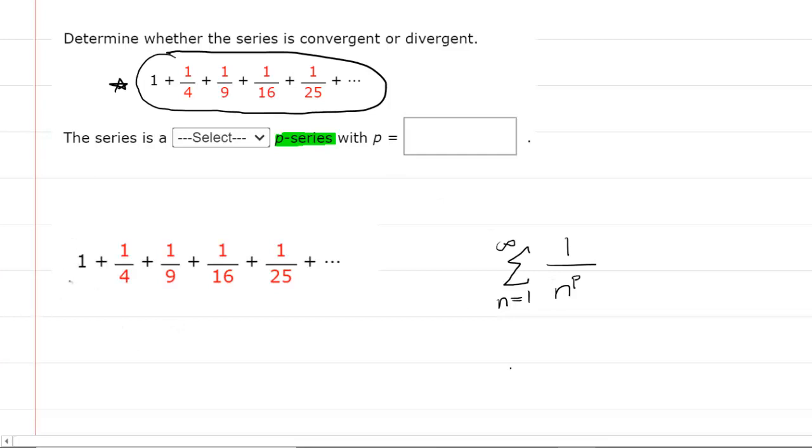To understand how to do that, let's rewrite the series. Let's start with the first term, which is just 1. Why don't we rewrite that as 1 over 1 to the power of 2? We will see why that is beneficial in just a moment. Notice that is equivalent to 1.